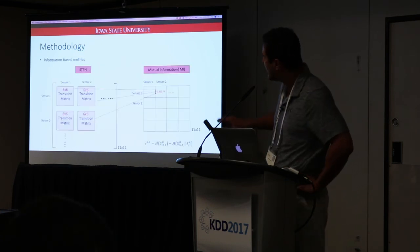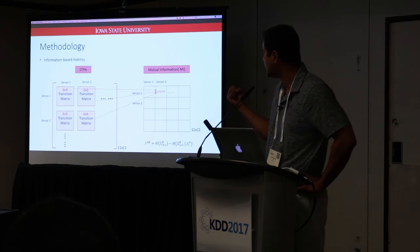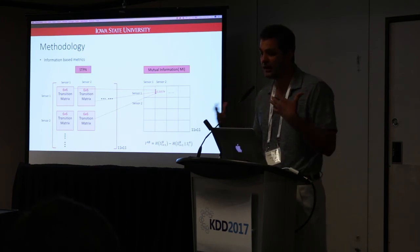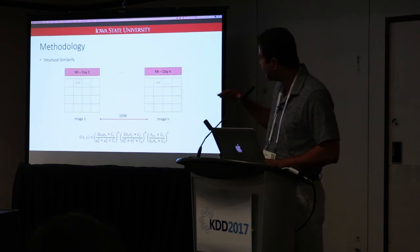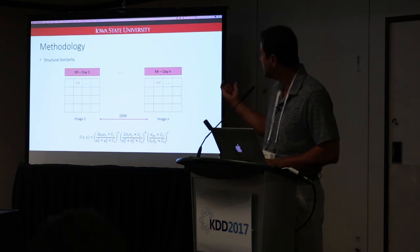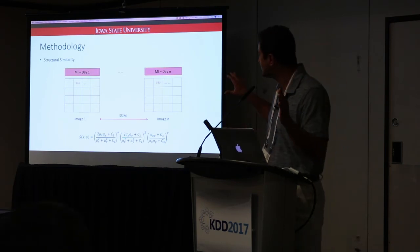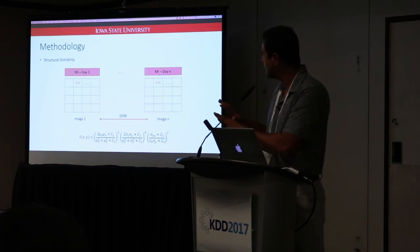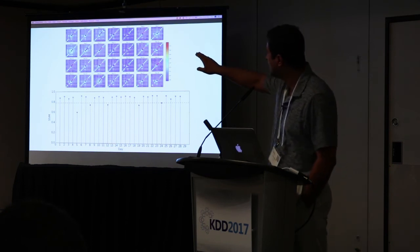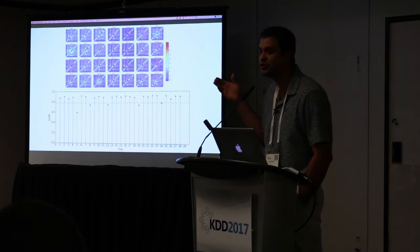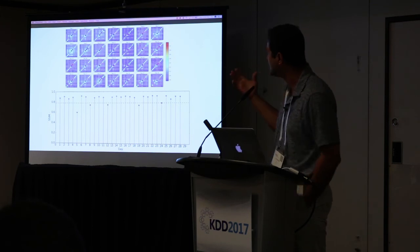Once we have the transition matrices, we convert them into a mutual information matrix. One reason for this is that we can then compare within a day how they look different. Converting every day of data into a mutual information matrix, we see the diagonal elements are highly correlated while remaining elements are less correlated. This mutual information heat map essentially transforms our time series data into a structural representation.